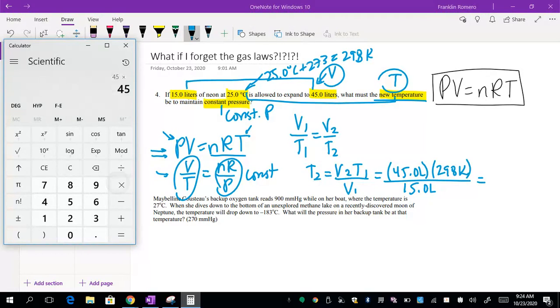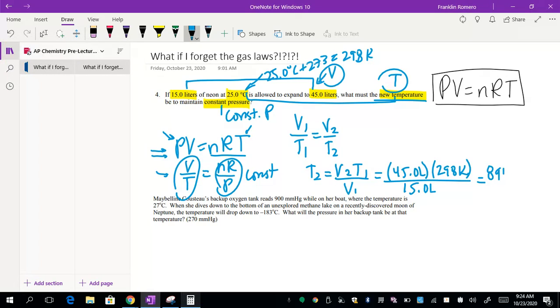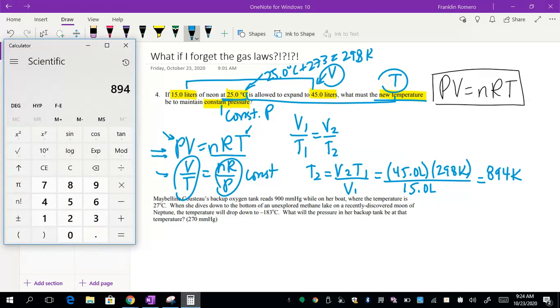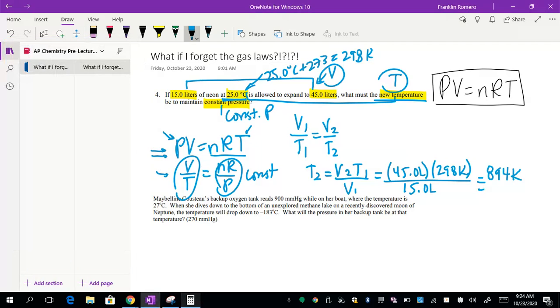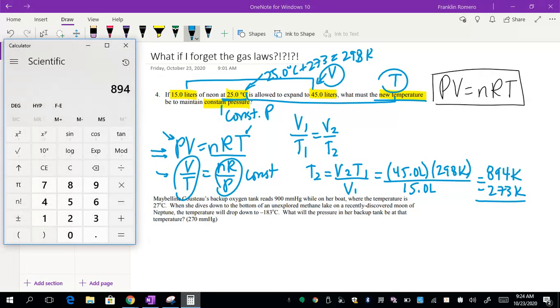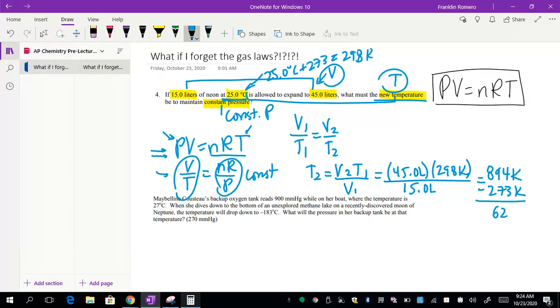If I go ahead and do the math, that's 45 times 298, and I'm going to divide by 15. That gives me 894 Kelvin. Now, typically, if you're given a temperature starting in degrees Celsius, it's usually the polite thing to do to convert that back to Celsius at the end since I'm currently in Kelvin. So I'll subtract 273, and I get 621 degrees Celsius.